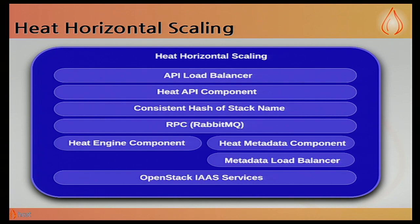As far as scaling goes, the way we handle that is through the hashing of the stack name. A load balancer in front of the API sends requests out to the correct engine component given the stack name, and accesses the engine that's actually looking after that particular stack — horizontal scaling on top of the stack.